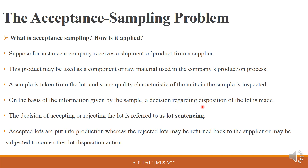On the basis of the information given by the sample, a decision regarding the disposition of the lot is made. You inspect all units of the sample; the sample provides information about quality, and on that basis you either accept the lot or reject the lot. Disposition means the decision regarding the lot — whether we are accepting it or rejecting it.